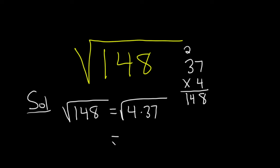And so this is equal to the square root of 4 times the square root of 37. And the square root of 4 is 2, and then this is the square root of 37.